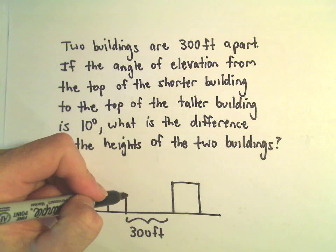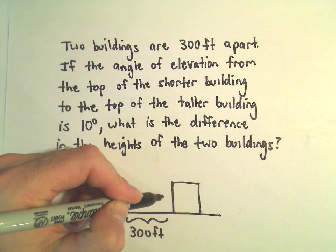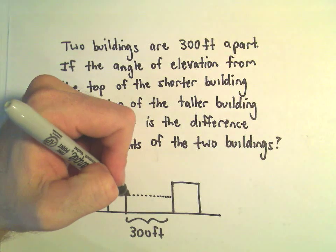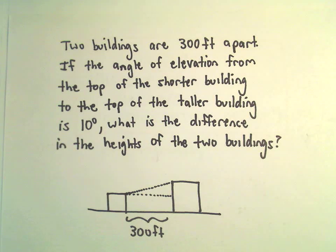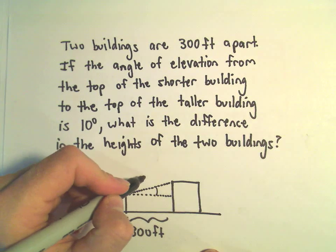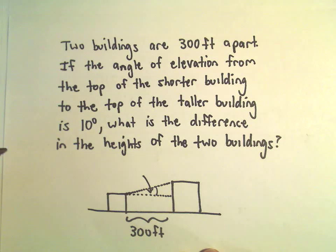So the idea is from the smaller building I'll just make a little horizontal line and then I'll make a little diagonal line to the top of that building. And that angle inside of there, we're told that this angle is 10 degrees.